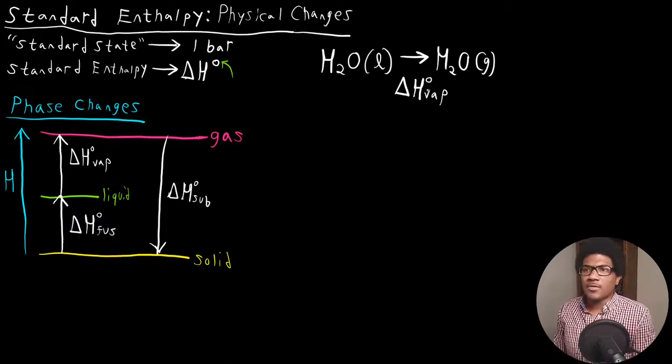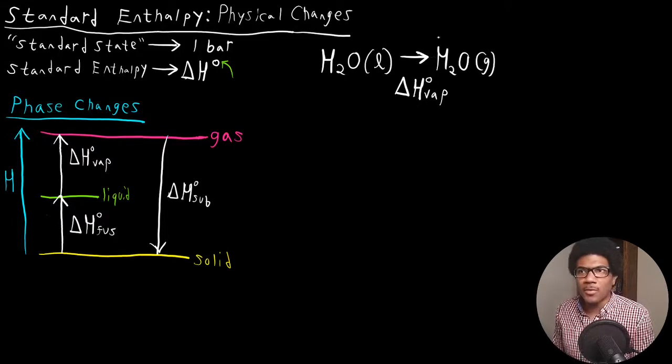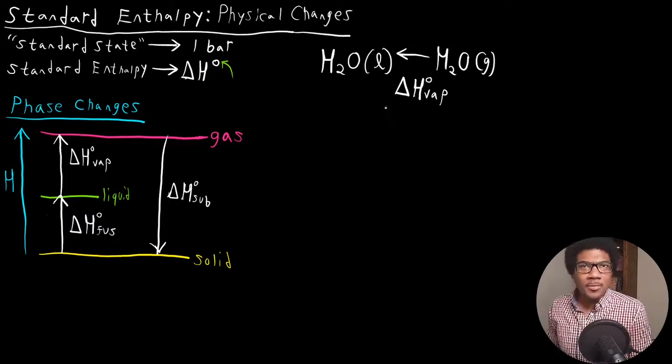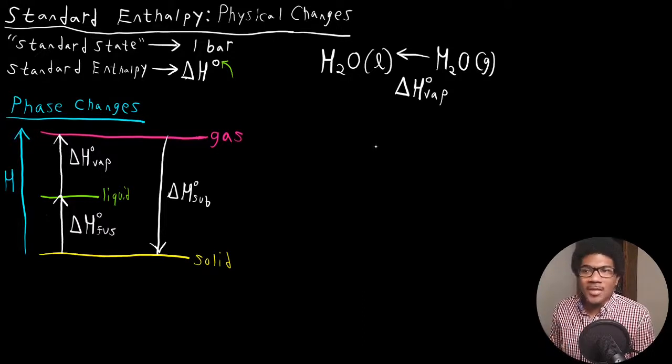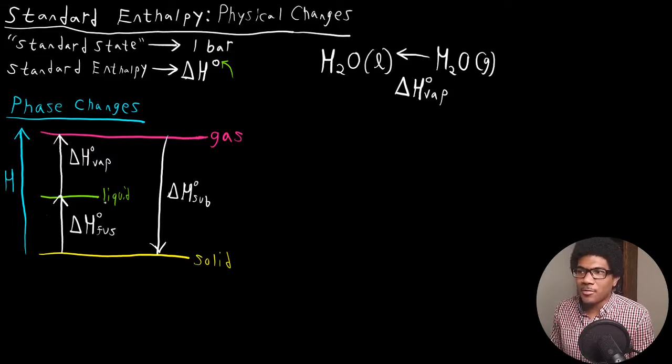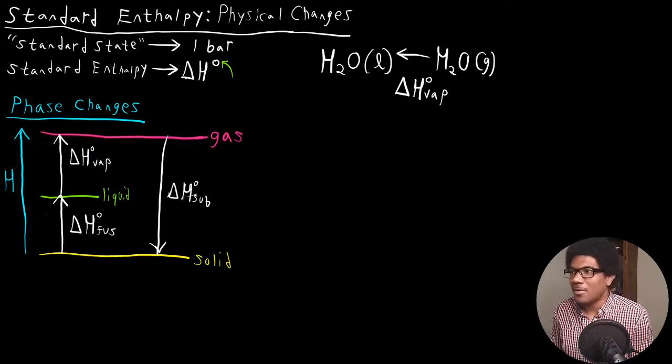You might be wondering, there's a standard enthalpy of vaporization, why is there no standard enthalpy of condensation that's reported? The opposite process. What if we were to reverse this arrow? What's the standard enthalpy of the opposite process going from gas to liquid? There's something very nifty about the enthalpy that allows us to get these values very easily. If we have all of these three phase changes, we actually have all of the reverse processes. Let me show you what I mean.